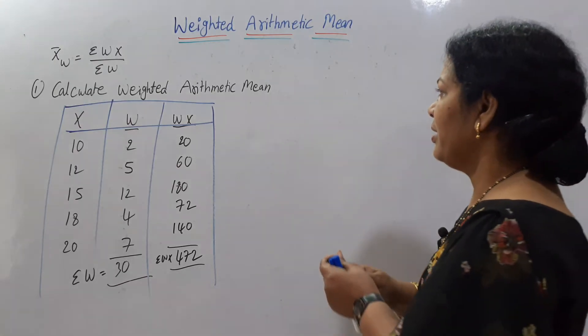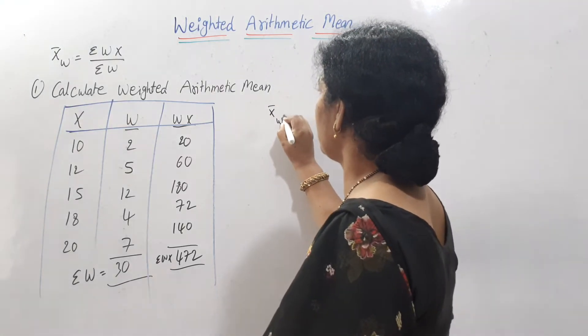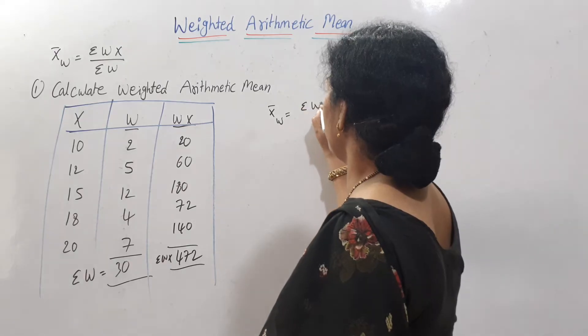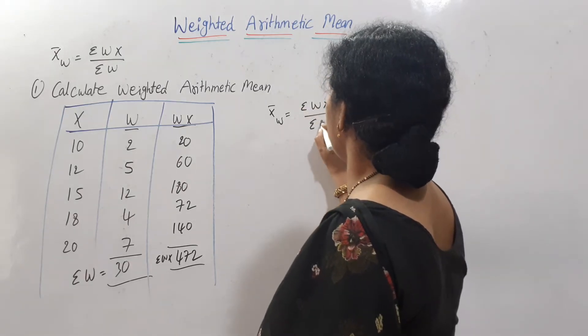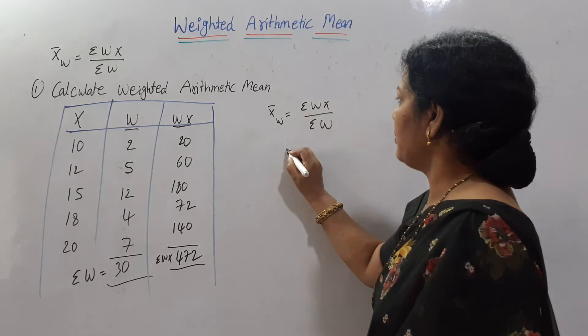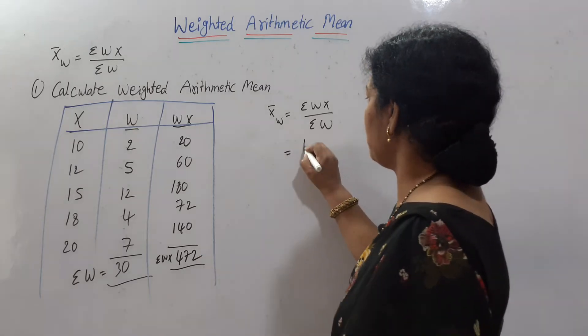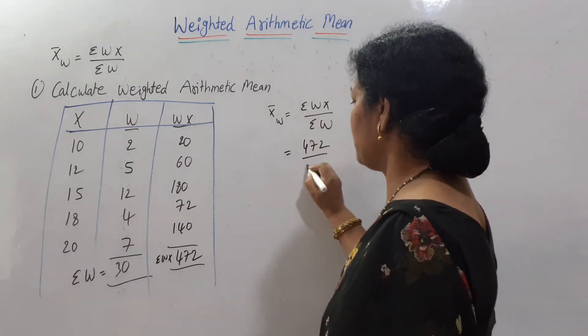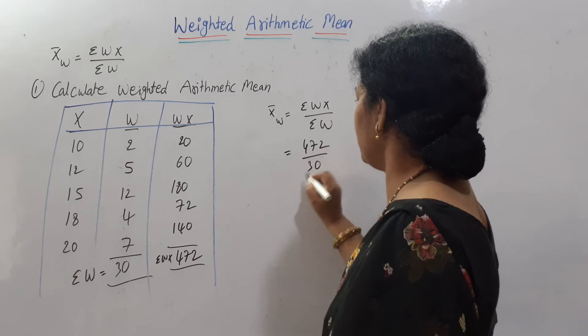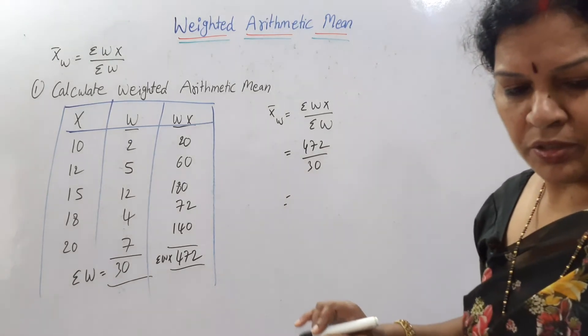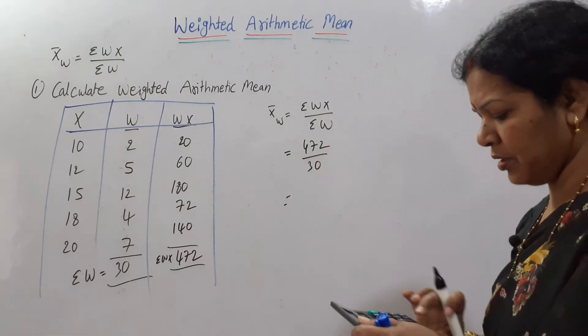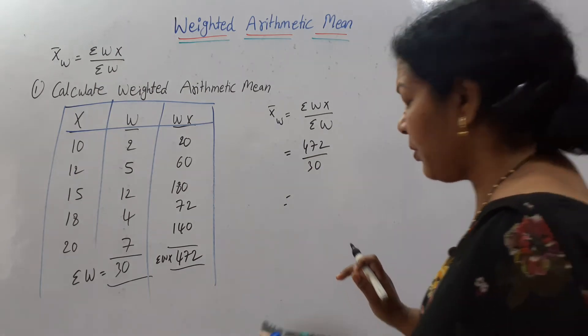We know the values, what we have to do. Just simply write the formula: x̄w = Σwx/Σw. Σwx is 472, so 472÷30. If you calculate it divided by 30, we will get 15.73.